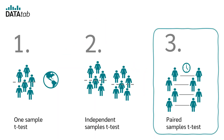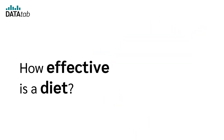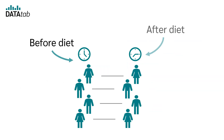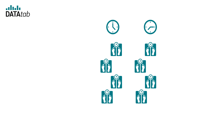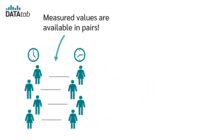When do we use the paired samples t-test? We use the paired samples t-test to compare the means of two dependent groups. For example, we want to know how effective a diet is. To do this, we weigh 30 people before the diet and then weigh exactly the same people after the diet. We can then look at the difference in weight between before and after for each subject. In a paired sample, the measurements are available in pairs. The pairs result, for example, from repeated measurements with the same people.